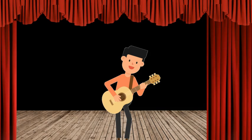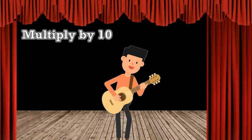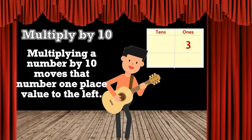Matthew's last song is called 'Multiply by Ten.' He would like to dedicate this song to his mom, who taught him that multiplying by ten moves that number one place value to the left. For example, solving three times ten, you move the three to the tens place, and since there are no ones left, you put a zero in the ones place. So three times ten equals thirty.